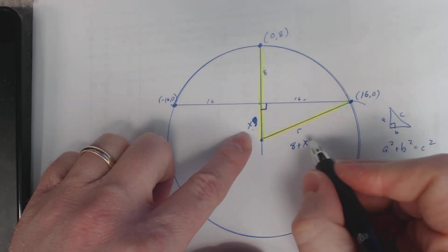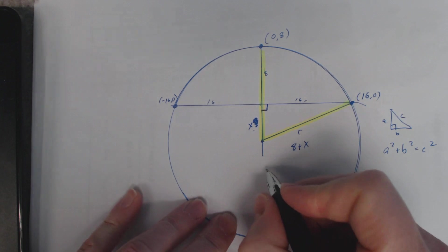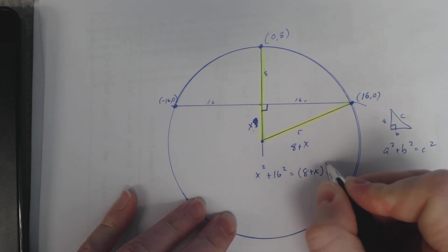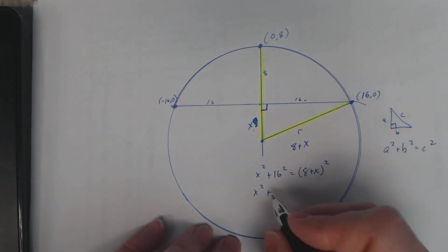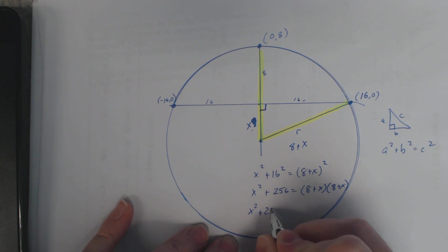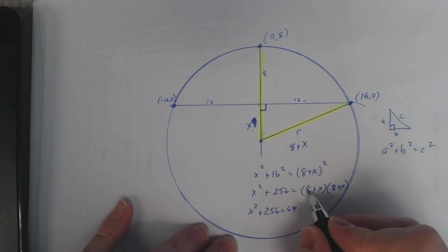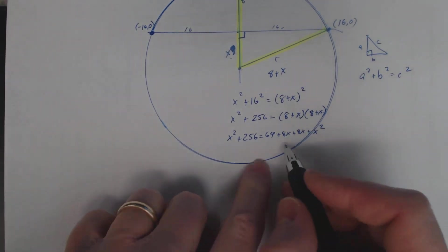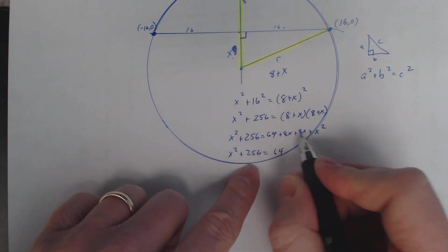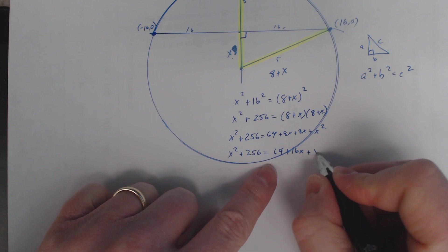So now I can actually solve for x here, because a squared plus b squared equals c squared. So x squared plus 16 squared equals hypotenuse squared. That'd be x squared plus, what is 16 squared? 256. And then 8 plus x - let's multiply this out. 8 times 8 is 64, 8 times x is 8x, x times 8 is 8x, and x times x is x squared.